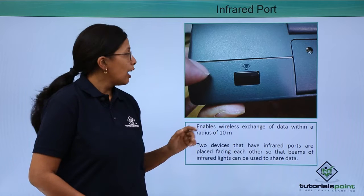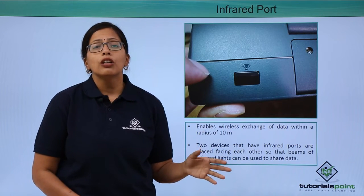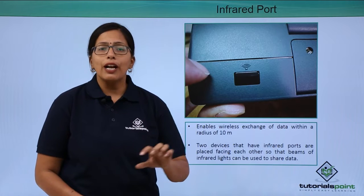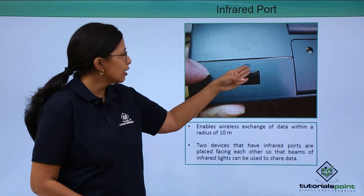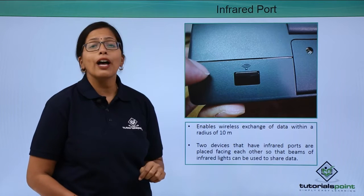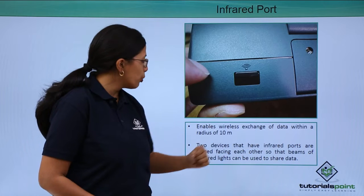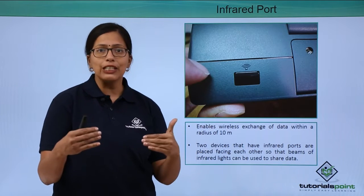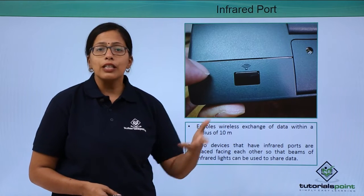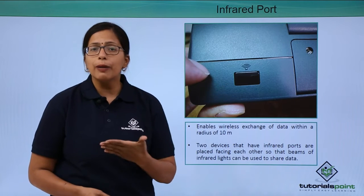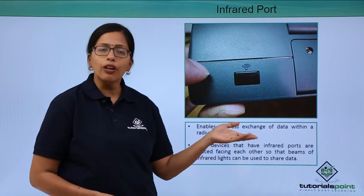Infrared port. The infrared port uses infrared rays to connect with devices over a short range of 10 meters. As you can see here, the icon for wireless connection is shown. Two devices that have infrared ports are placed facing each other, because if the beam sent by one device is not received by the other, the data will not be stored, read, or deleted.